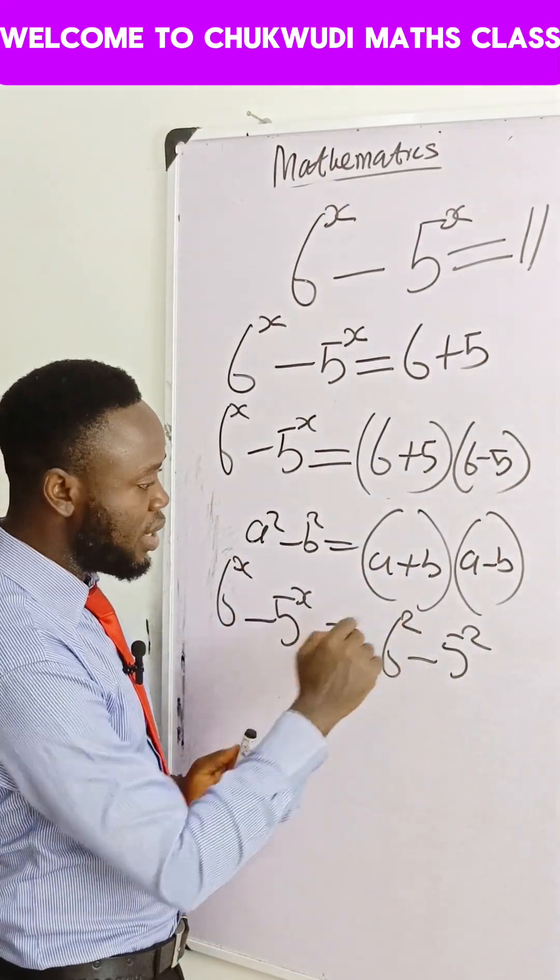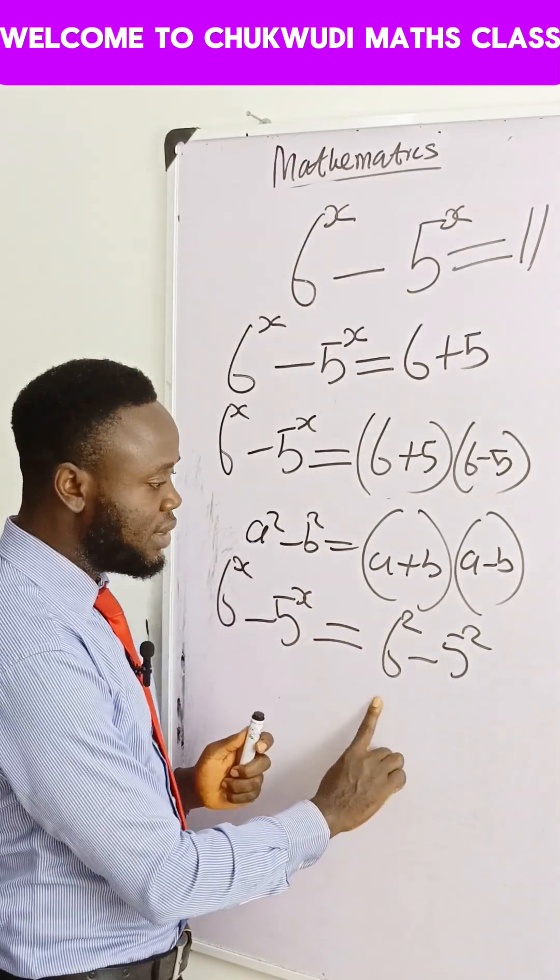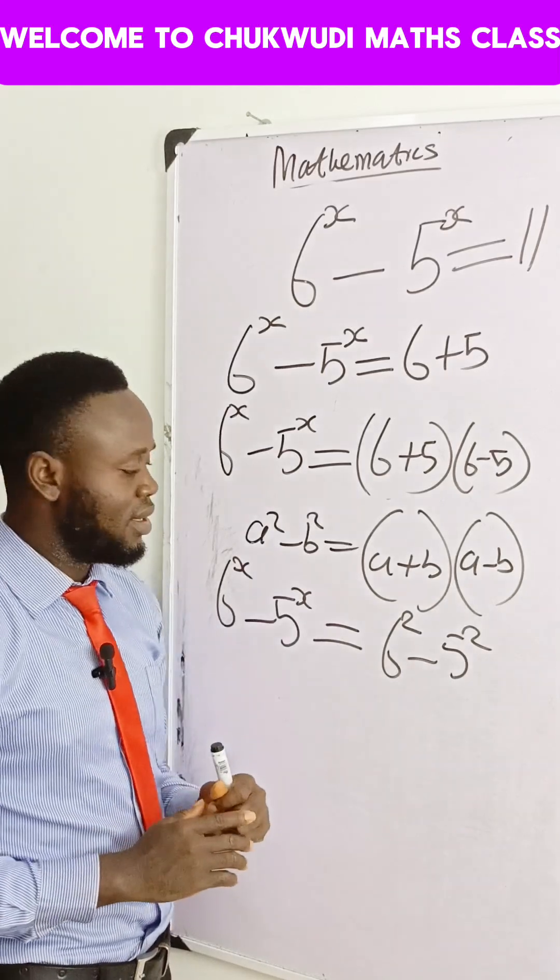Now let's check again. 6 squared is 36. 5 squared is 25. 36 minus 25 will still give you 11. Nothing has changed yet. Alright.